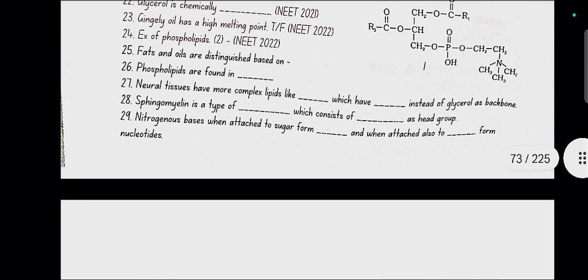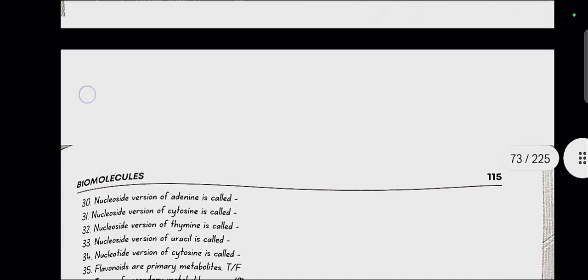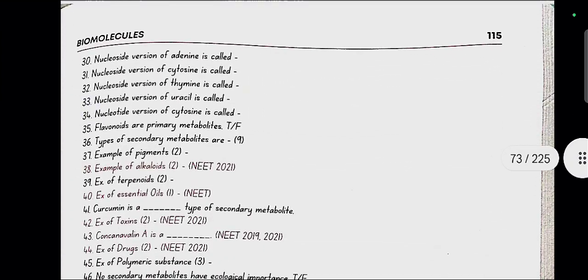Nitrogenous bases when attached to sugar form nucleoside and when attached also to phosphate form nucleotides. Nucleoside version of adenine is called adenosine, cytosine is called cytidine, thymine is called thymidine, uracil is called uridine. Of cytosine it is called cytidylic acid.